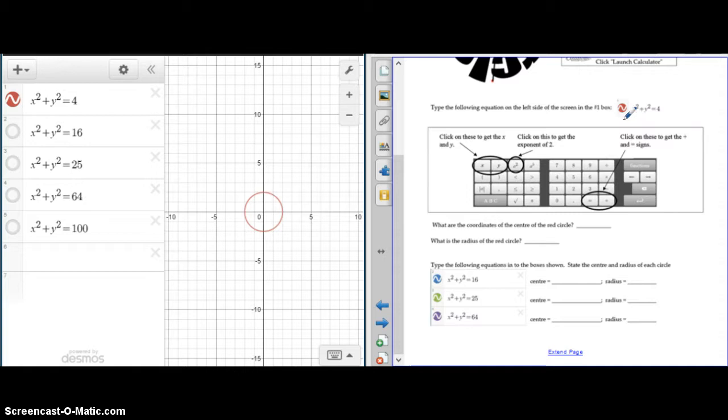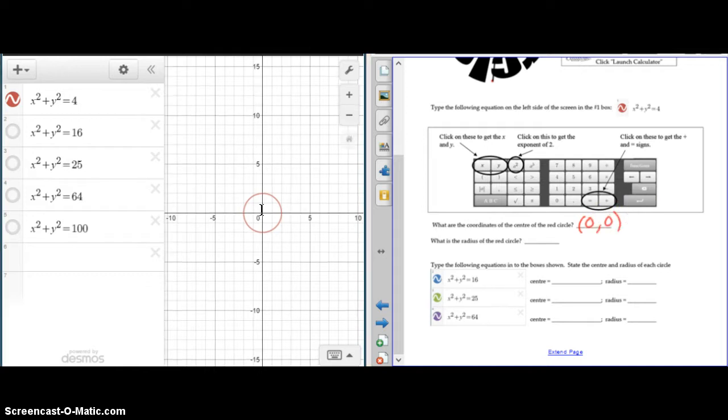The first circle you were asked to draw was x squared plus y squared equals 4. When you graph that one in Desmos, you get this circle right here. And as you can see, what are the coordinates of the center of the red circle? They are at 0, 0. And the radius is the distance from the center to the circumference. And if you look at the scale, that radius is 2.